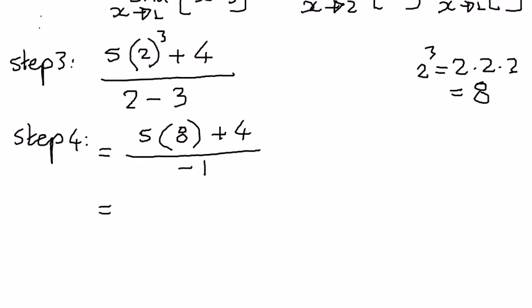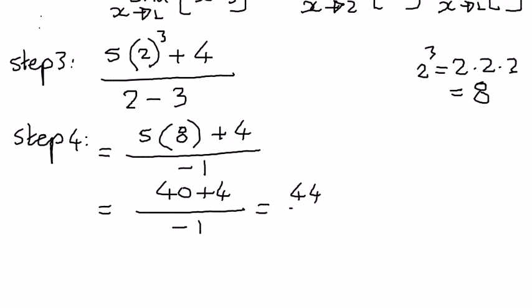So now we can simplify this math some more. 5 times 8 is equal to 40, plus 4, divided by negative 1. 40 plus 4 is going to be equal to 44, divided by negative 1. A positive number divided by a negative number is going to give us a negative value, so 44 divided by 1 is 44. Negative 44 is our answer.